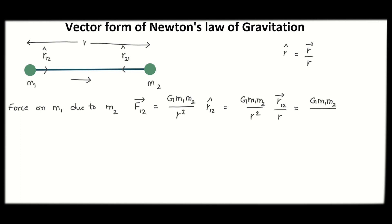The complete vector formula gives us: force on mass m1 due to mass m2 equals Gm1 m2 divided by r cubed, multiplied by r12 bar. This is the vector form of Newton's law of gravitation.